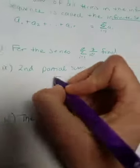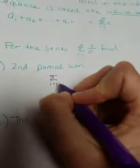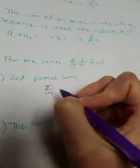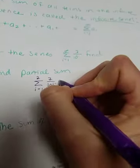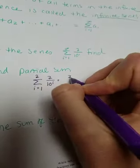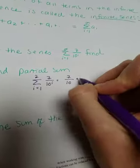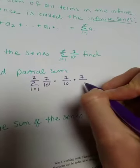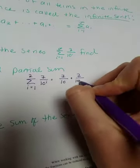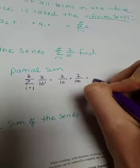Pretty straightforward. So we're looking at the summation of i equals 1, and we're going to 2, and it's 7 over 10 to the i. Okay, so that's really just 7 over—so when I put 1 in, that's going to be 7 tenths plus 7 over—when I put 2 in, that's 10 squared, which is 100, and that's going to be 0.77.